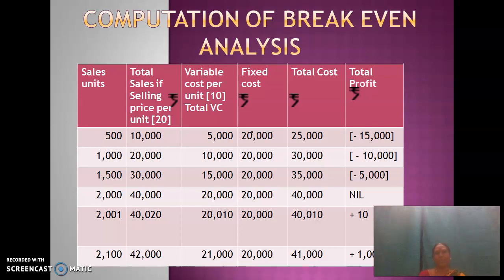After computing the break-even point, the company fixes its sales target for the particular month or year. Sales should not be less than the BEP units — they should be above the BEP units. That is the purpose for which BEP is calculated. I hope in this module you are able to understand how BEP is calculated and how it is interpreted. If there is any clarification, we can clarify. Thank you.